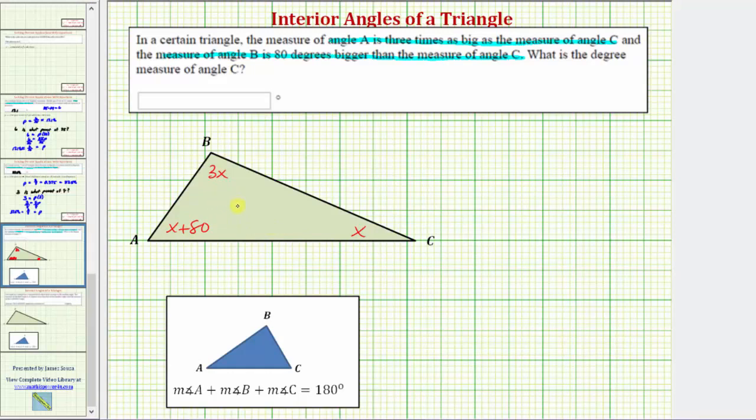Now that we have an expression for the three interior angles of the triangle, and we know the sum of the interior angles of any triangle equals one hundred eighty degrees,